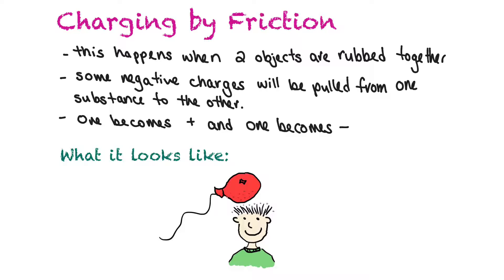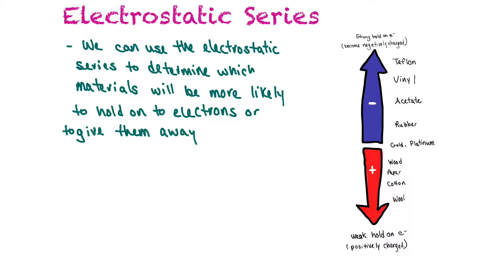We can charge an object three different ways: by friction, by contact, and by induction. Charging by friction occurs when two objects are rubbed together and some negative charges are pulled from one substance to the other. For example, rubbing a rubber balloon on your hair causes the balloon to gain negative charges and your hair to gain positive charges, which is why your hair stands up when you bring the charged balloon near it.